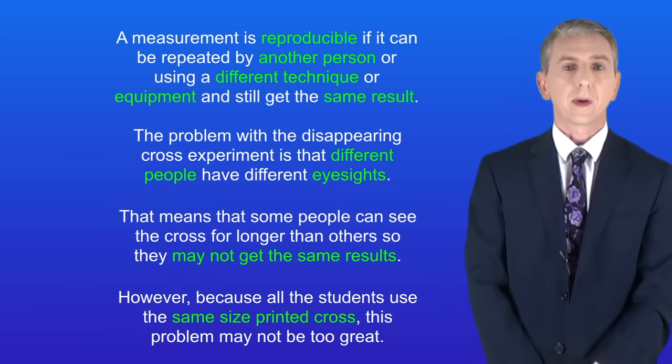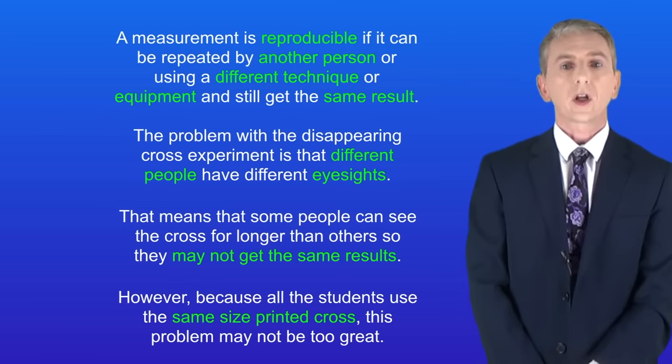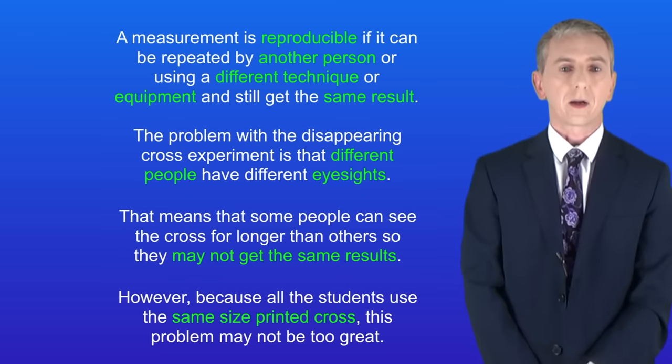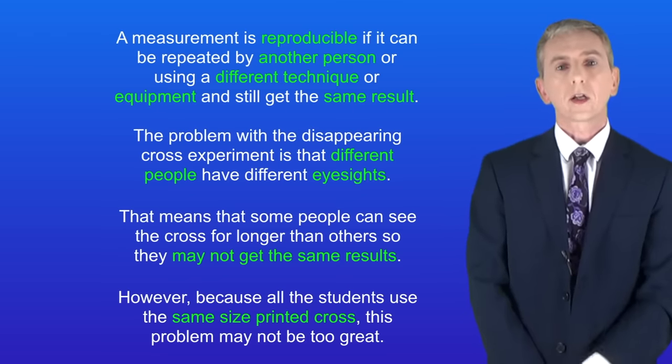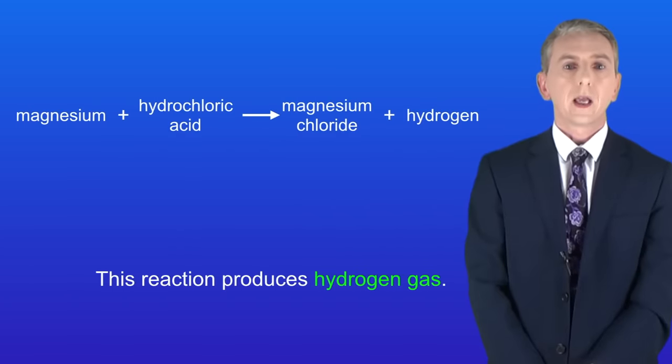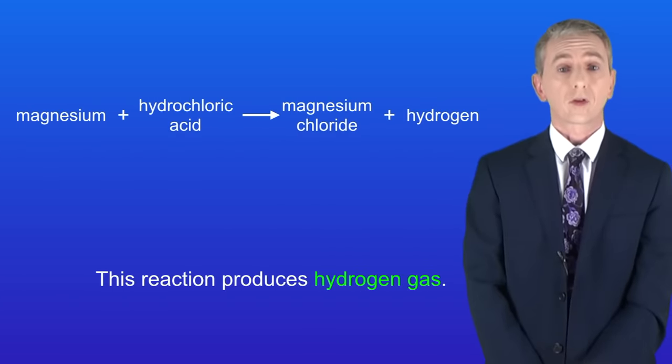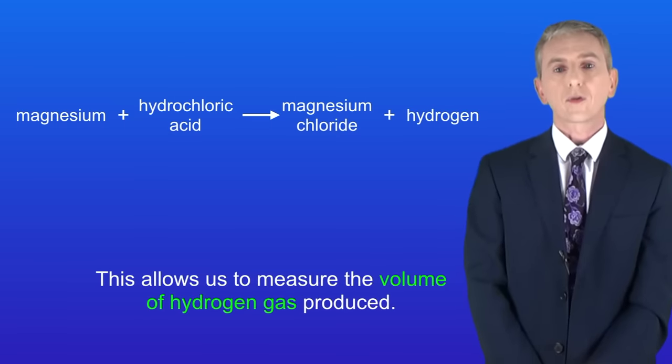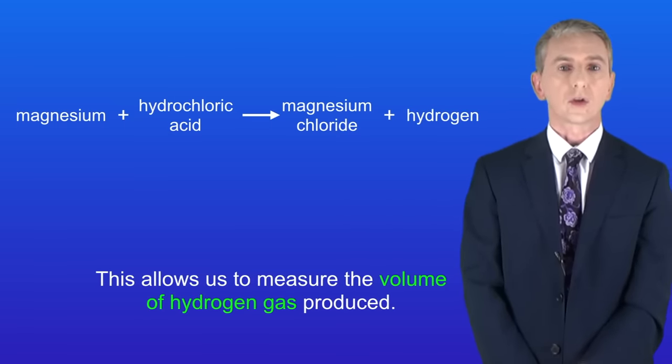We're going to look now at the second method for this required practical. We're going to measure the volume of a gas produced by a reaction. Here we're reacting magnesium with hydrochloric acid. This reaction produces hydrogen gas and this allows us to measure the volume of hydrogen gas produced.